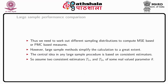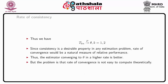Now we come to large sample comparison. We assume that there are two consistent estimators T1n and T2n of some real-valued parameter theta. This means T1n converges to theta in probability and T2n converges to theta in probability — sometimes it may converge to theta almost surely. Since consistency is a desirable property for any estimation problem, rate of convergence would be a natural measure of relative efficiency. Thus, the estimator converging to theta at a higher rate is better.